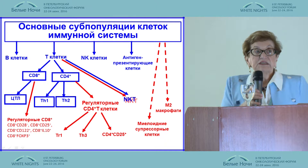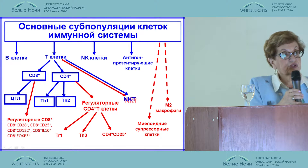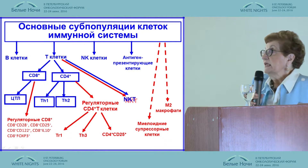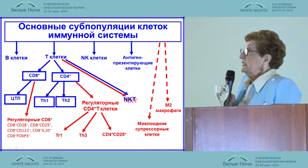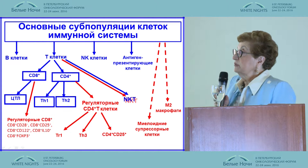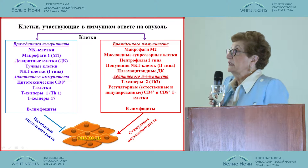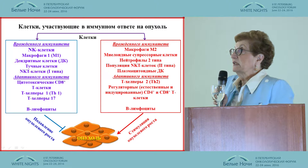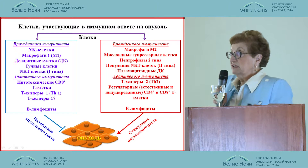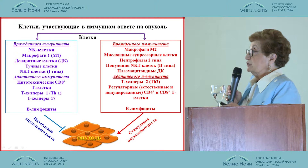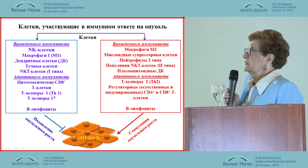This well-known slide shows all immune cells to understand what happens in the immune system. In red are suppressor cells, and in blue are cytotoxic cells. As we can see, one and the same population includes cells of both types. In innate immunity, macrophages of the first type, dendritic cells, and NKT cells of the first type are responsible for immune response.